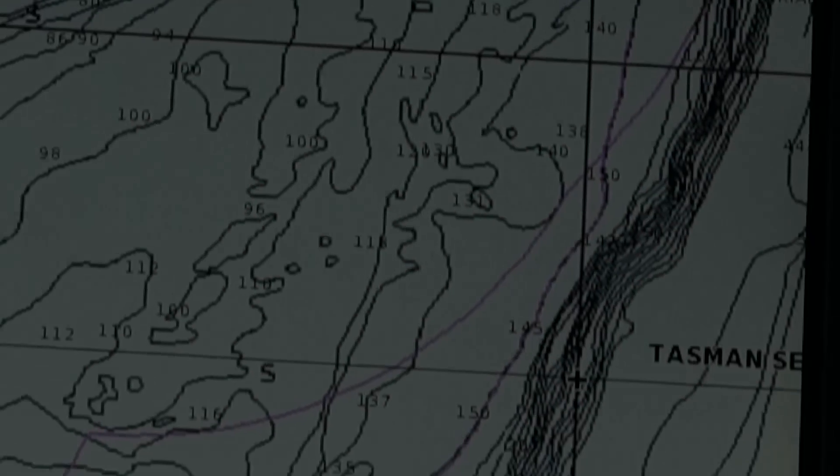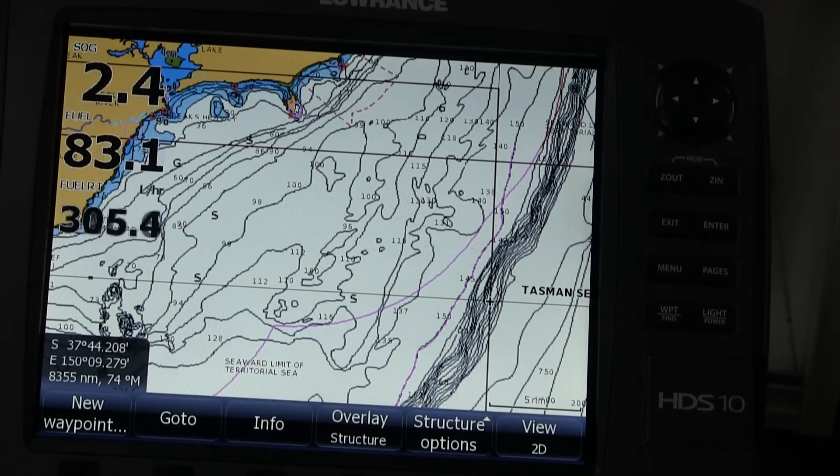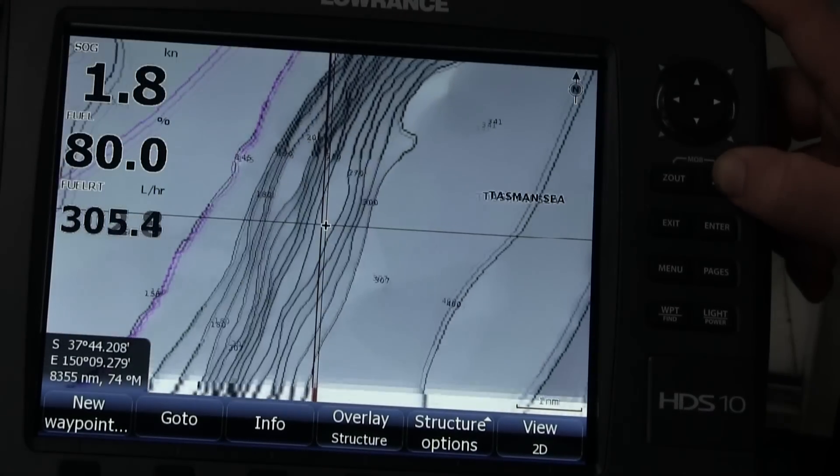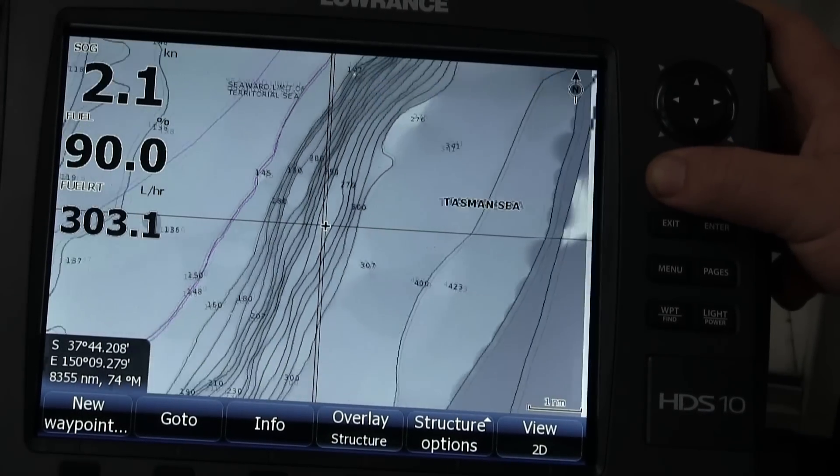Bear with me a second and I'll get it set up so you can have a proper look. So this is the standard platinum chart, just off Mallacoota. We've got the shelf out here. To zoom in, we get this kind of detail.